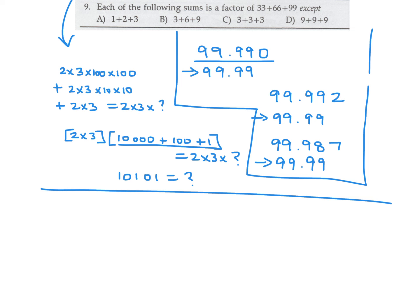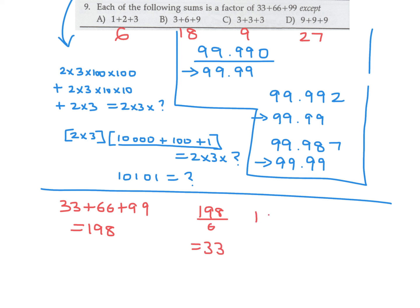Each of the following sums is a factor of 33+66+99 except which one? First, 33+66+99 equals 198. The answer choices sum to 6, 18, 9, and 27. Is 198 divisible by 6? Yes, it's 33. By 18? Yes, it's 11. By 9? That gives 7.3, which is not an integer. So 9 is not a factor, and number 9 is D.